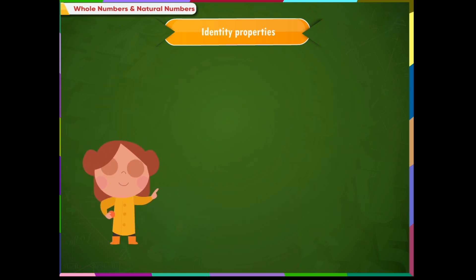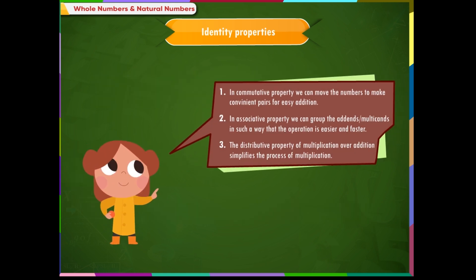Let us do a quick recap. Remember: in commutative property, we can move the numbers to make convenient pairs for easy addition. In associative property, we can group the addends or multiplicants so that the operation is easier and faster. The distributive property of multiplication over addition simplifies the process of multiplication.